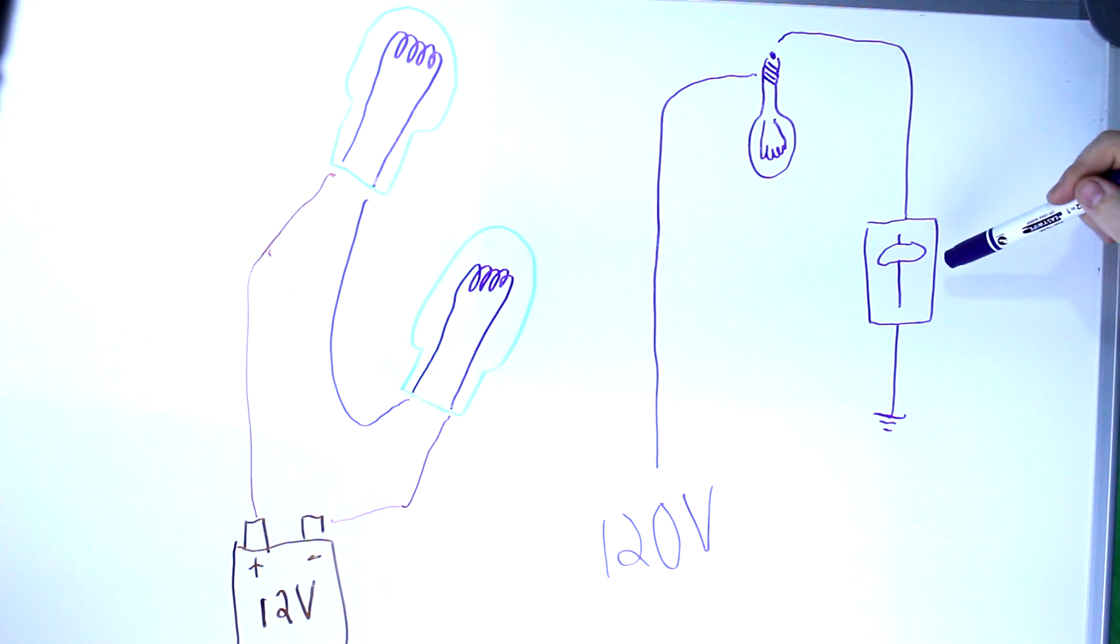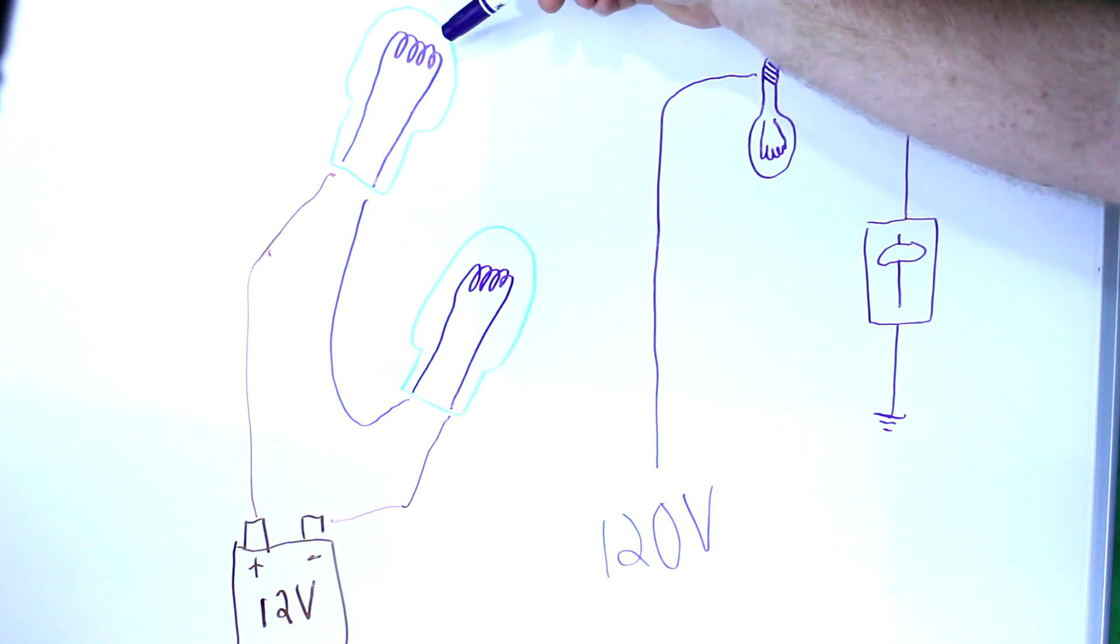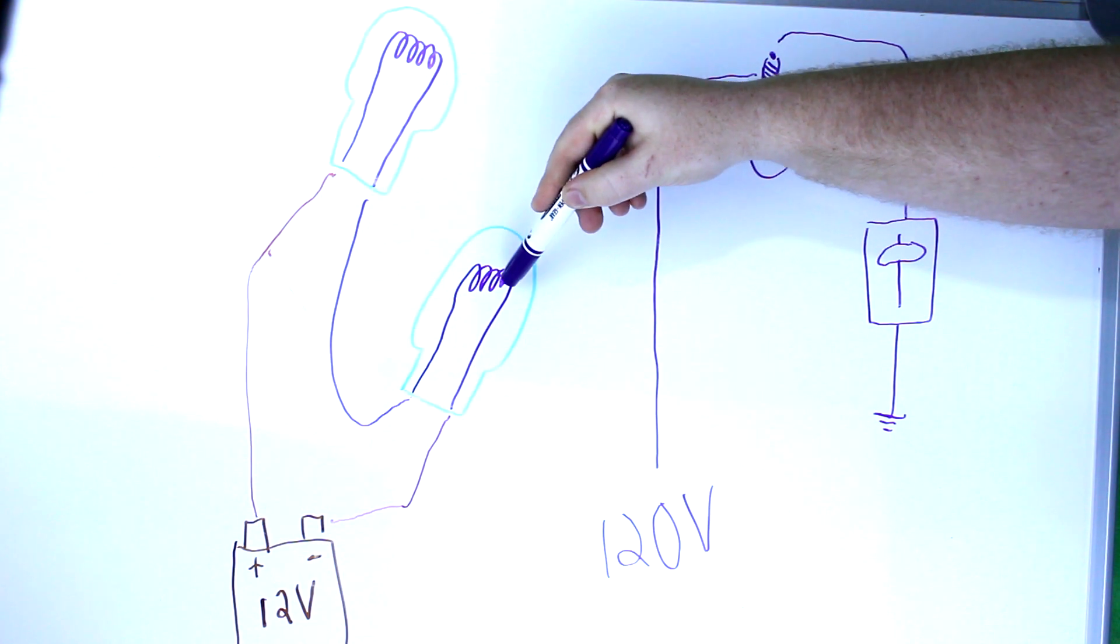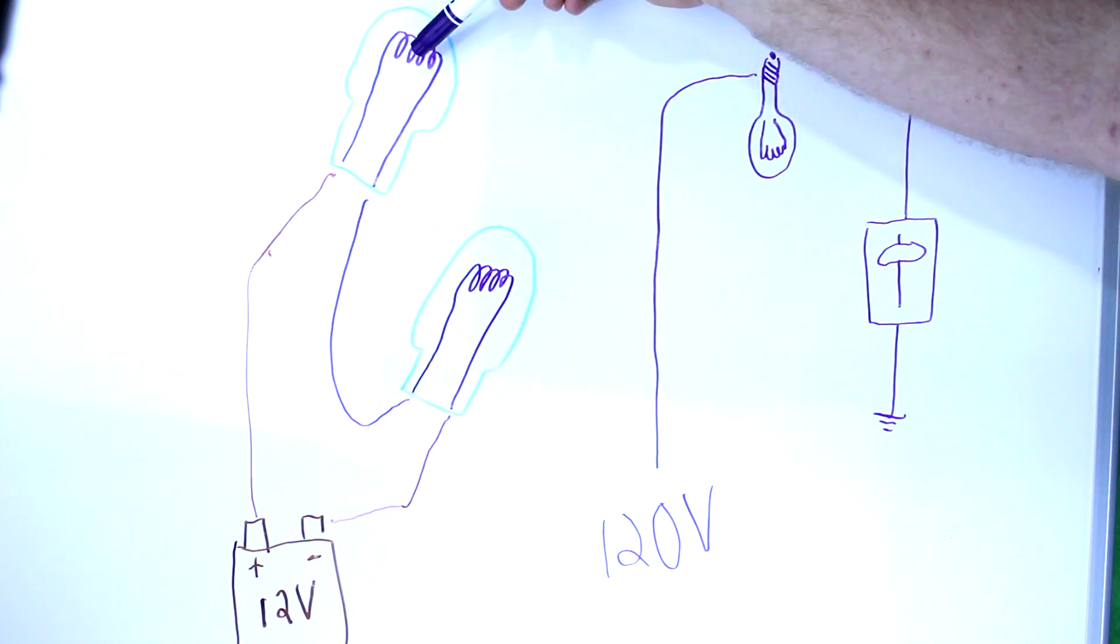So this bulb has resistance, and this switch has resistance. You alter the resistance here, and you get a change here. So going back to these bulbs, this bulb is going to be dimmed by this bulb, and this bulb is going to be dimmed by this bulb.